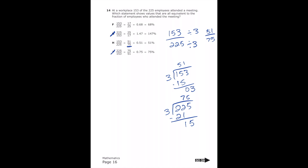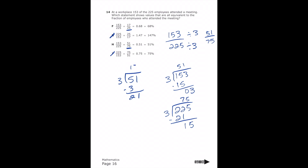I already see an answer choice with the fraction 51/75, but I need to check whether 17 over 25 is also correct. Dividing both top and bottom by 3 again: 51 divided by 3 — 3 goes into 5 once with remainder 2, then into 21 seven times — giving 17. And 75 divided by 3 — 3 goes into 7 twice with remainder 15, and 3 goes into 15 five times — giving 25. So we also have 17 over 25.